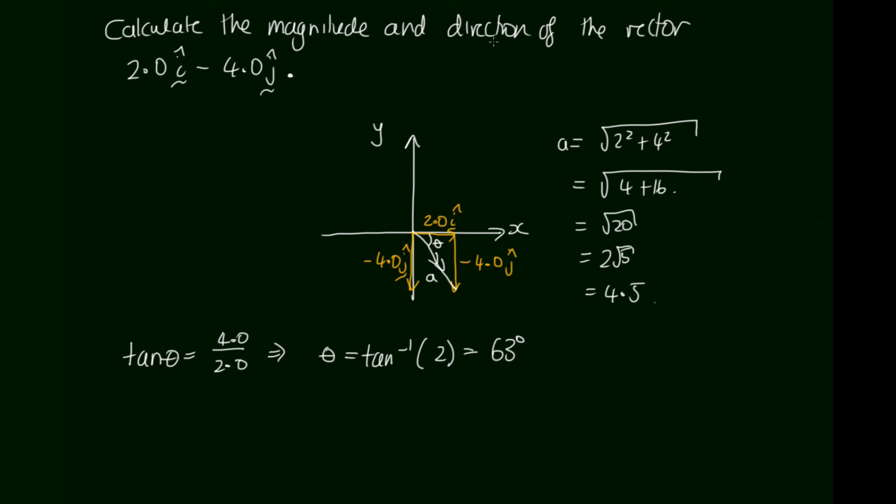So now we need to describe our magnitude and direction. This vector has magnitude 4.5 and is directed 63 degrees below the positive x axis. That's one way we can describe the direction. Alternatively if you prefer you can use the words clockwise and anticlockwise. So you could say 63 degrees clockwise from the positive x axis for example.